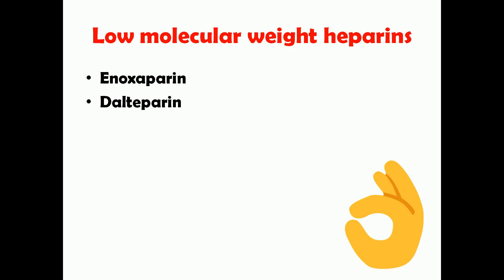There are a few contraindications to giving Heparin. These include heparin-induced thrombocytopenia, acute bleeding, severe hypertension, and hypersensitivity to Heparin. There is a massive list of contraindications, but these four are the most important. If Heparin is given to a patient with any of these conditions, bleeding will be worsened and the mortality of the patient may increase due to severe bleeding.